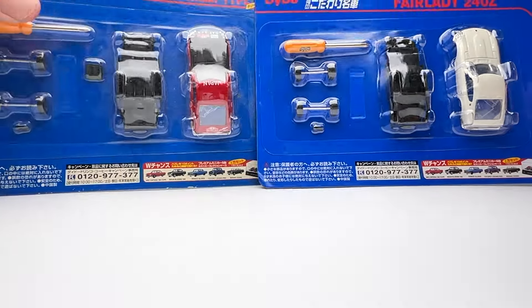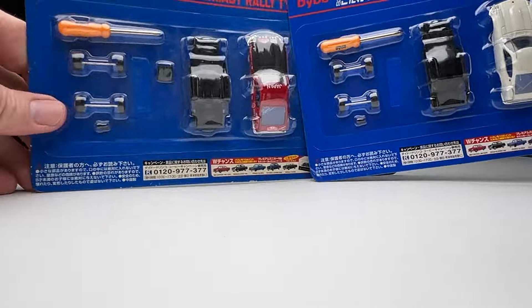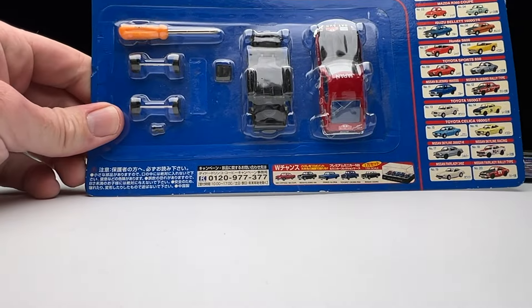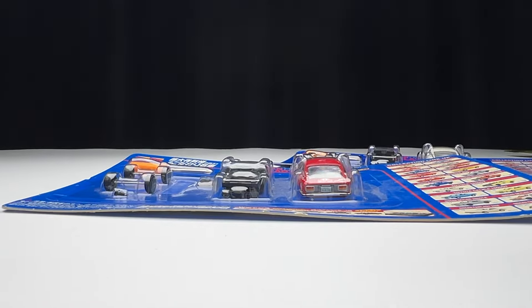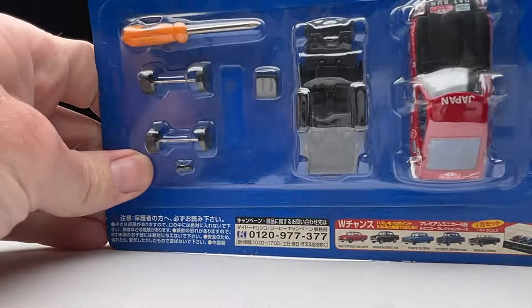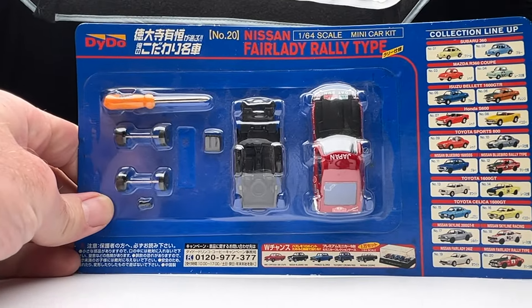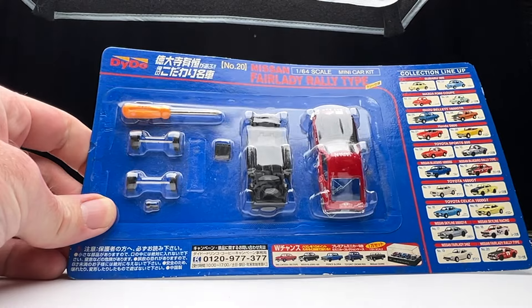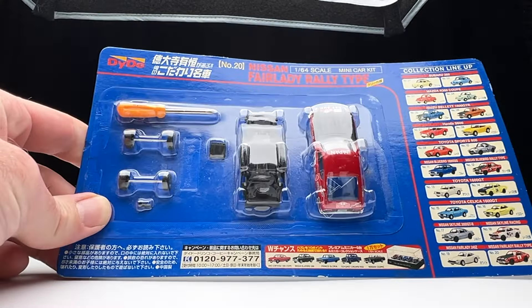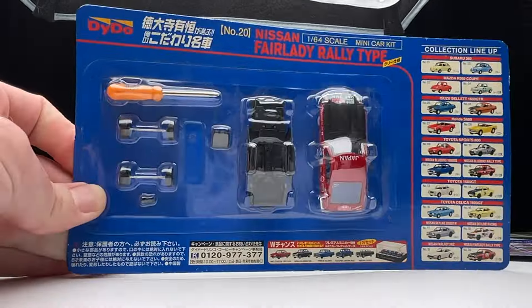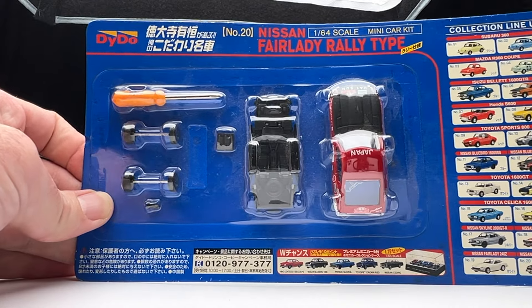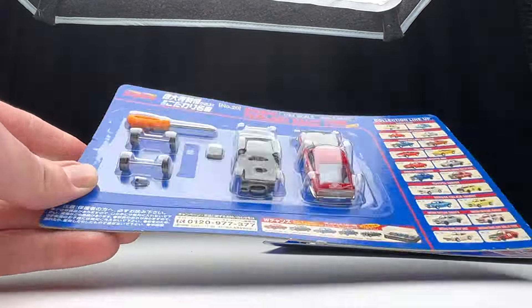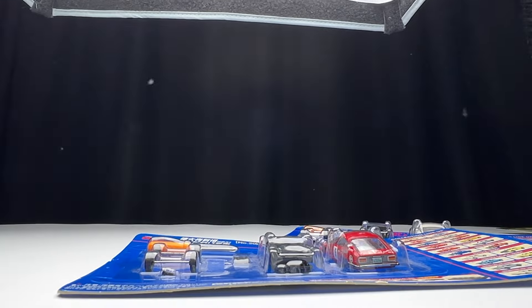Hello YouTube, it is Champion DJK coming at you again with another video. Today we've got some interesting stuff here. We've got the Nissan Fairlady Rally Type and it is a DIDO 1:64 scale mini car kit. I've opened up one of these in the past on the channel.